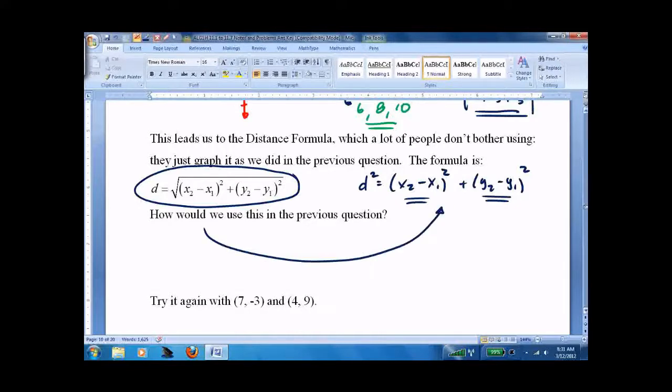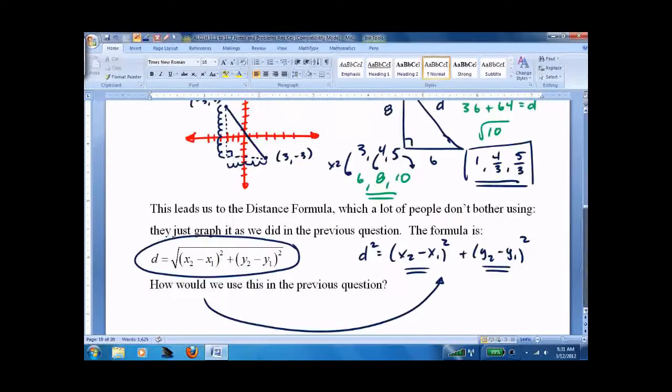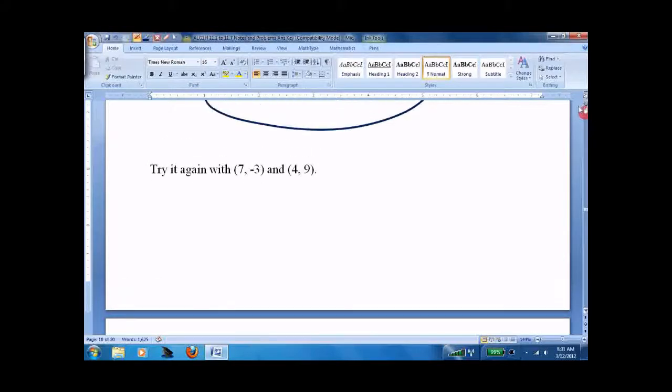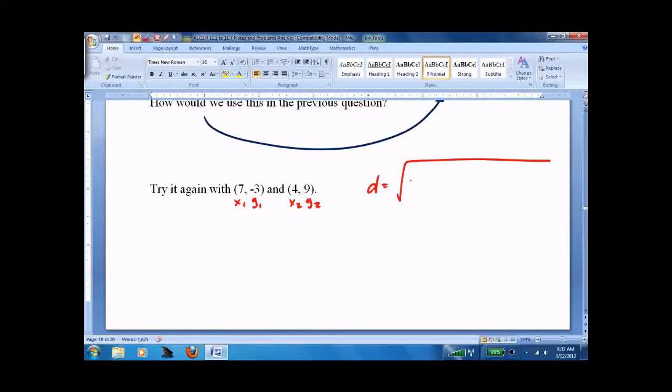Try it again. With 7, negative 3 and 4, 9. And here's what most people do. They label them x1, x2, y1, y2. And they say d equals big monster square root. 4 minus 7 squared plus 9. Watch your negatives. Minus negative 3 squared.